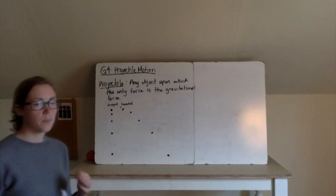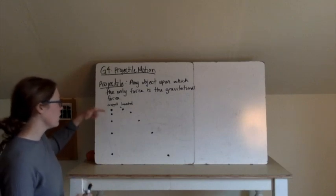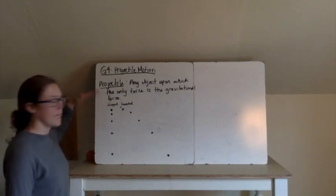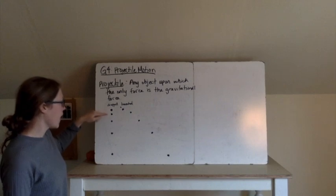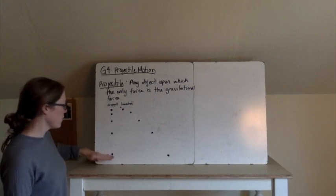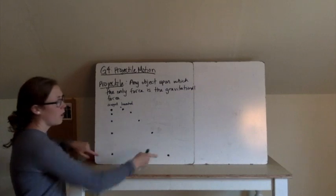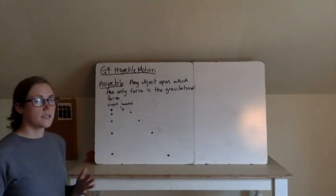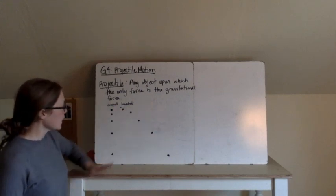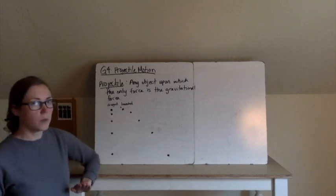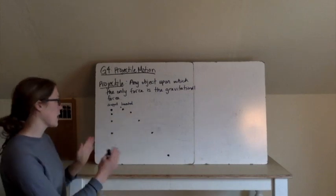A couple of things to point out about this dropped and launched ball. First thing I already said is that their vertical motion is actually identical. If we look at on this y-axis, they both start from the exact same vertical position in their distance above the ground every second. The distance above the ground is the exact same for each ball every second. The only thing that's different is that the launched ball is also making some horizontal progress.